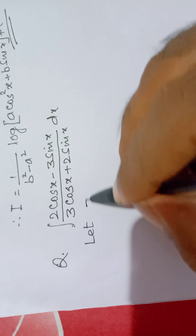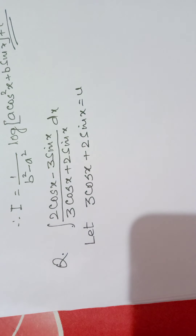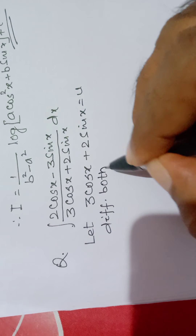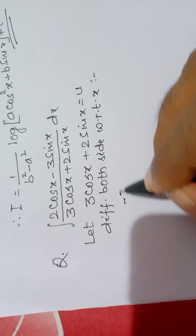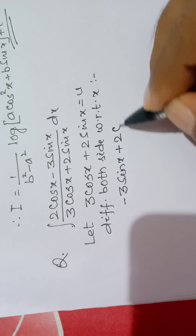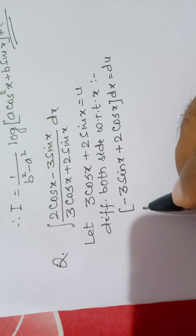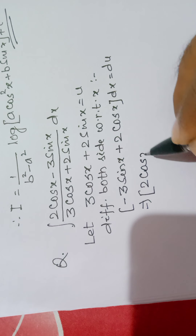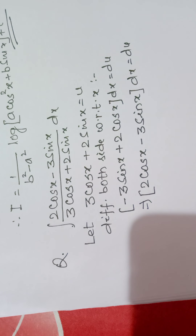Let u equals 3 cos x plus 2 sin x. Differentiate both sides with respect to x: minus 3 sin x plus 2 cos x, multiplied by dx, equals du. After rearranging the terms, 2 cos x minus 3 sin x times dx equals du. Now come on to the question.